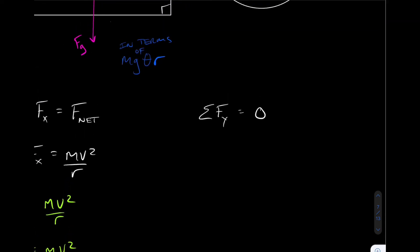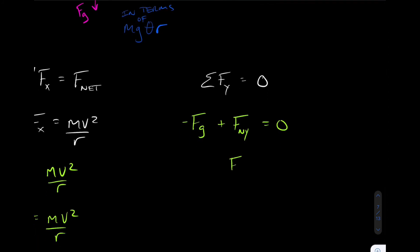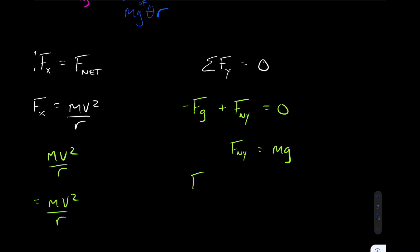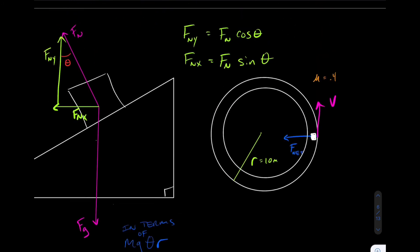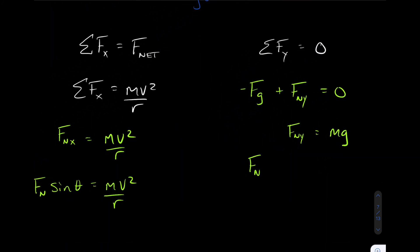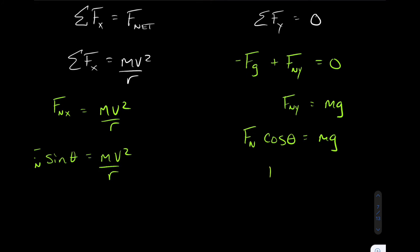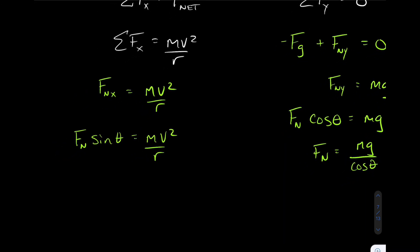In the y-direction, we have two forces: Fg acting in the negative direction and the y-component of the normal force. These two must be equal to zero, so FN·y = mg. Expanding FN·y, since it equals FN cosθ, we get FN cosθ = mg. Dividing both sides by cosθ gives us FN = mg/cosθ.